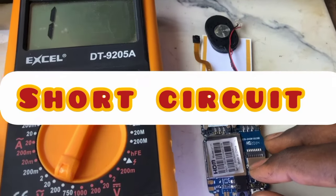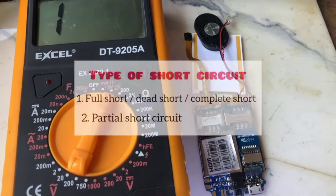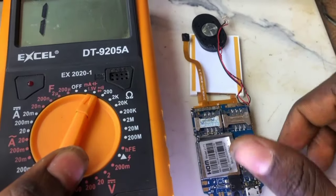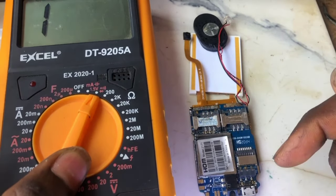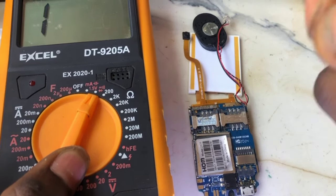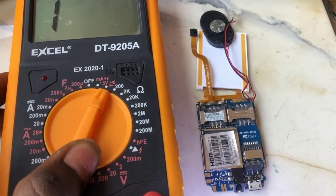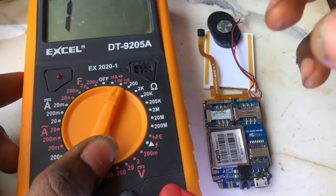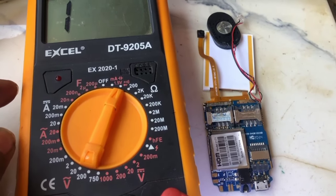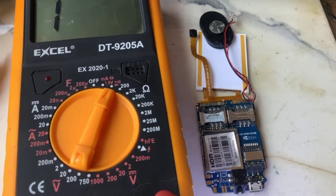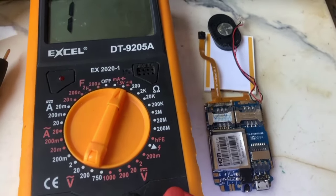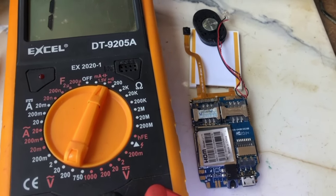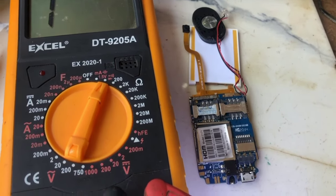In today's video, we'll be talking about short circuits. We have two types of short circuits: the full short and the partial short. In today's video we are deliberating on what we call the full short. The full short is when the multimeter is showing zero-zero-zero resistance. That is what we call a full short, and full shorts are mostly caused by capacitors and sometimes diodes, while partial shorts are caused by ICs and sometimes diodes can cause a partial short also.